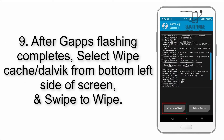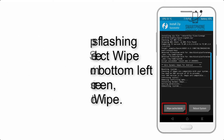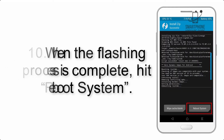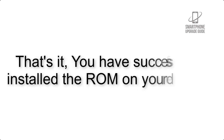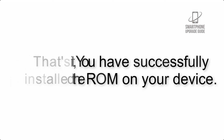Step 8: Flash the GApps zip package in the same manner. Step 9: After GApps flashing completes, select Wipe Cache and Dalvik from the bottom left side of the screen and swipe to wipe. Step 10: When the flashing process is complete, hit Reboot System. That's it — you have successfully installed the ROM on your device.